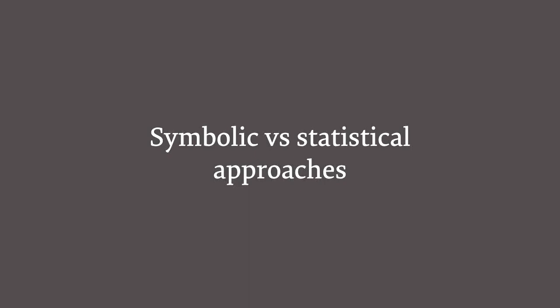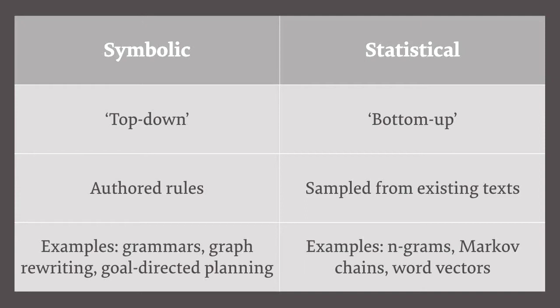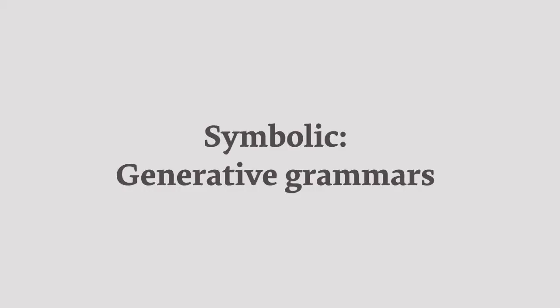Moving beyond strings to the level of words and sentences — this is really where the most well-known methods for generative writing exist, and I'm going to go through some of these methods and put them in context. There are symbolic and statistical ways of looking at these generative methods. We can classify them into structural versus statistical approaches — bottom-up, starting from a sampled corpus of existing texts, which is where the machine learning approaches come in, or top-down, where you try to encode human knowledge and semantics into a model and then use that model to produce the writing. The most well-known and oldest familiar way of symbolically generating text is generative grammars.